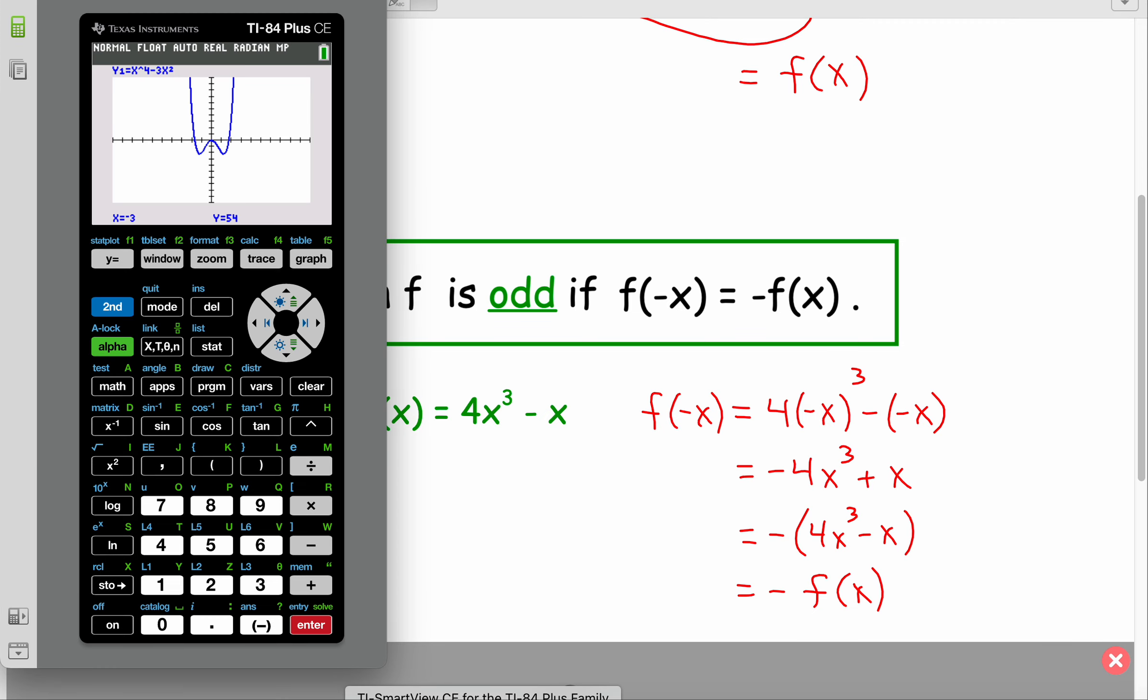What does that mean graphically? Let's take a look. Let's visualize this. What if I have 4x cubed minus x, and then I graph that.